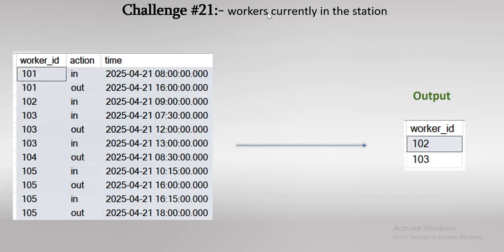I'll tell you how this scenario fits in real life. In some cases, there are rules where there should be a minimum number of workers inside the station in order to handle some kind of emergency situation. So if we need that info — how many workers are currently inside the workstation — we can use this log table to directly identify that.